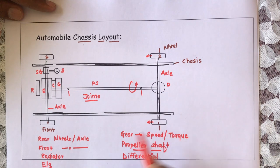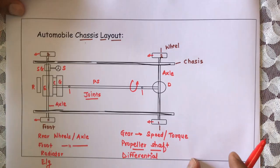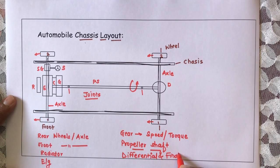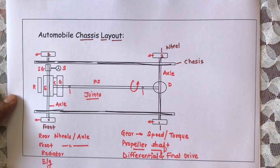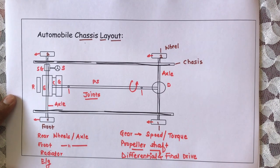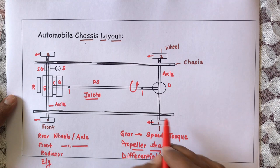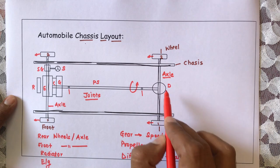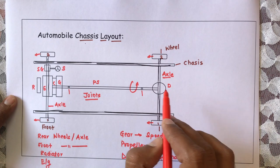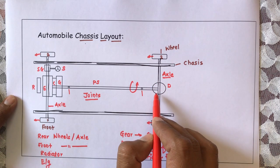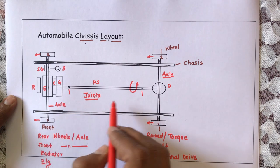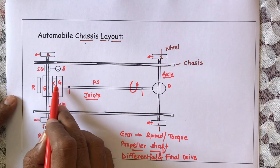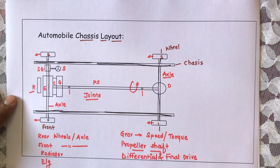Through these axles, power is transferred to the wheels, and as these rear wheels start rotating, the other wheels will also rotate. The rear wheels rotate by taking power from the rear axle, which takes power from the final drive and differential gearbox. That differential gearbox receives power from the propeller shaft, which receives power from the engine through the clutch and gearbox. The radiator is used to cool the engine.